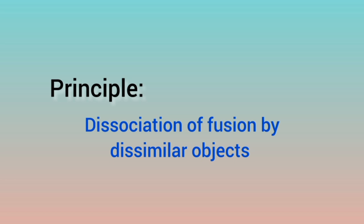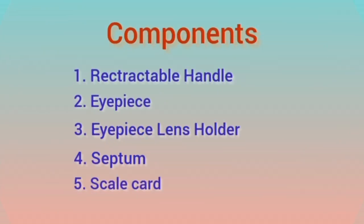There is a special component which dissociates the patient's fusion, so that one eye sees one object and the other eye sees a different object. We are going to see these components in the next slide.